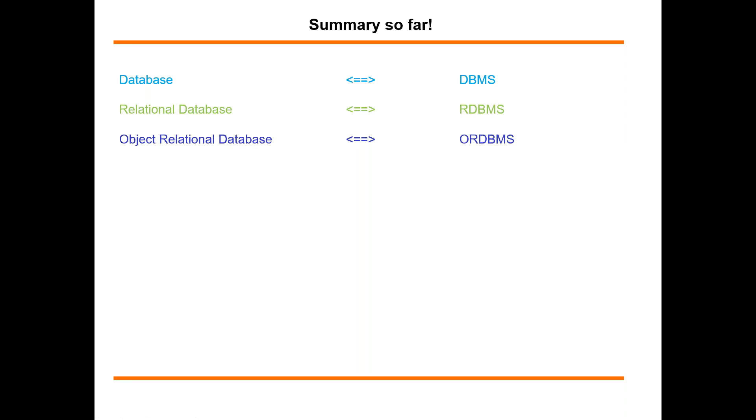So as a summary, so far we understood what is a database. This is just a hard disk. The one which sits on top of it is a DBMS. If a database model is designed using E.F. Codd's relational paper, then it's a relational database. The one which sits on top of this is called RDBMS.